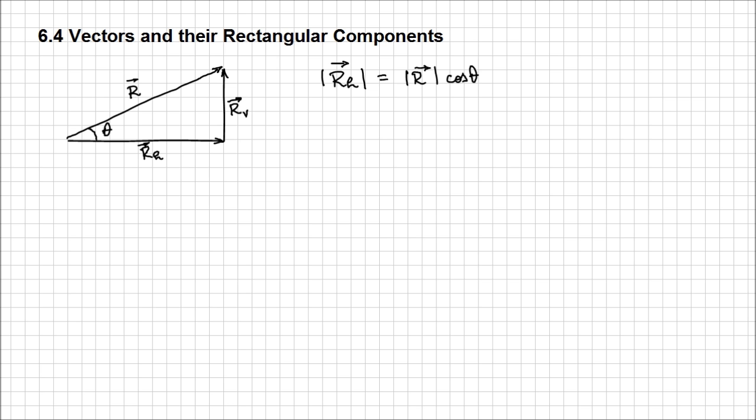While the magnitude of the vertical component is going to be the magnitude of R times sine of theta. We can also use Pythagorean theorem and vector addition, just everything that we already studied in the past.